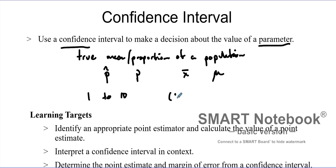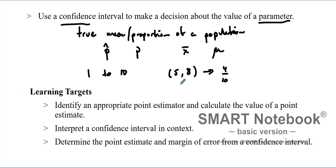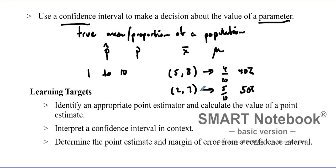If you pick a range from 5 to 8, that's 4 numbers out of 10, so you're 40% confident the number falls in there. If you extend the range from 2 to 7, that's 6 numbers — wait, that's 5 out of 10 — so you're 50% confident. You can see that a wider range gives you higher confidence.